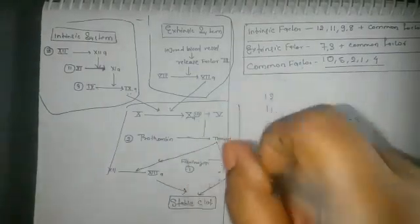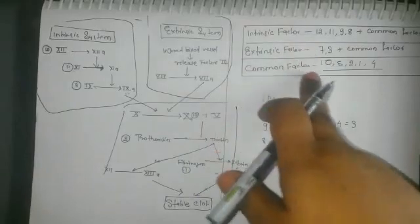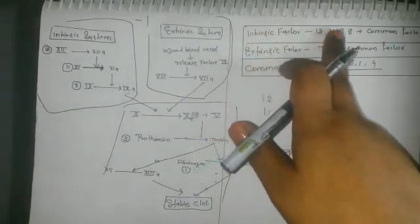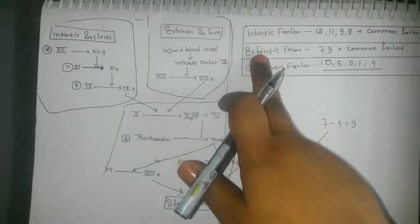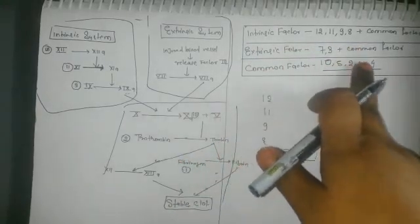This is the factor list. Intrinsic factors are 12, 11, 9, 8 plus common factors. Extrinsic factors are 7, 3 plus common factors. Common factors are 10, 5, 2, 1, 13.